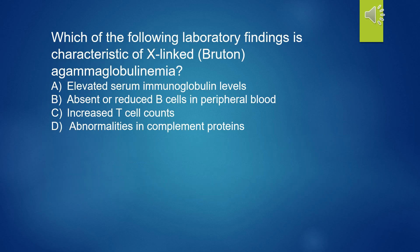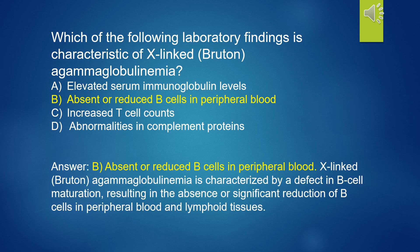Which of the following laboratory findings is characteristic of XLA? A. Elevated serum immunoglobulin levels. B. Absent or reduced B-cells in peripheral blood. C. Increased T-cell counts. D. Abnormalities in complement proteins. The answer is B — absent or reduced B-cells in peripheral blood. XLA is characterized by a defect in B-cell maturation, resulting in the absence or significant reduction of B-cells in peripheral blood and lymphoid tissues.